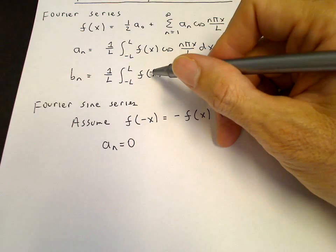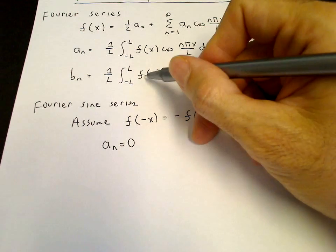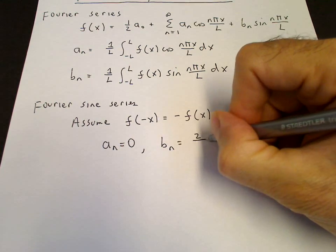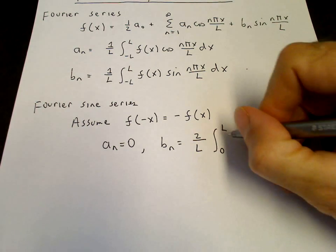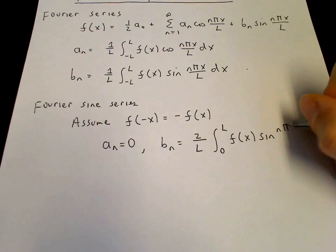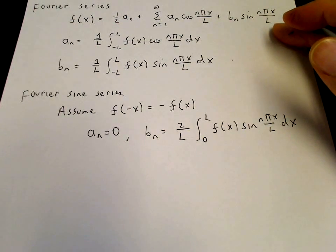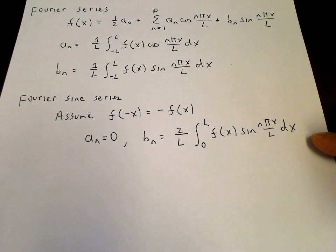b_n will be an integral of an odd function times an odd function, which is an even function. So b_n will be twice the previous integral if we integrate now from 0 to l of f(x) sine(nπx/l) dx. So the a's are zeros, and the b's are given by integrating from 0 to l of this integrand.